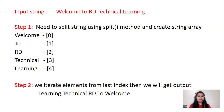In the program, very first we will split the string and then we will get an array of strings, and the array starts from the zeroth index. So the zeroth index element is 'welcome', first index element is 'to', second index element is 'RD', and so on. Now we have an array of strings. In the next step, we want to iterate all the elements from the array from the last index. Then we will get the fourth index element 'learning', then third index element 'technical', second index element 'RD', and so on. And then we will get our output: 'learning technical RD to welcome'.